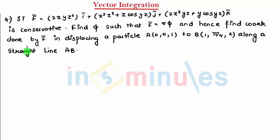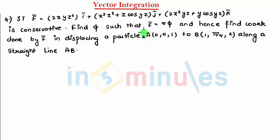Let's start with the next problem: show that F̄ is conservative — the meaning of conservative is irrotational. We also need to find φ and hence find the work done by F̄ in displacing a particle from A = (0, 0, 1) to B = (1, π/4, 2) along the straight line.